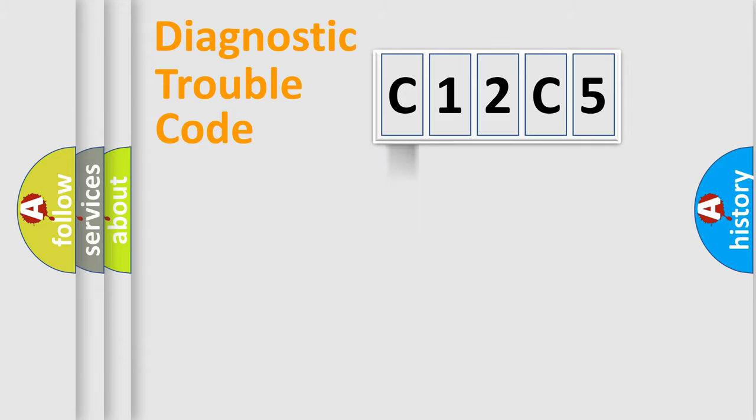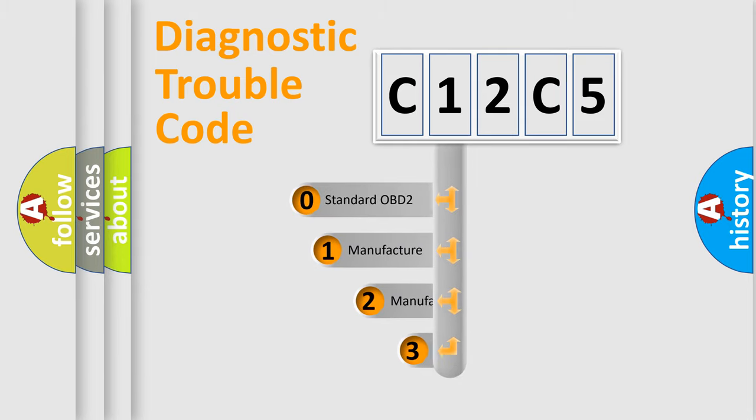Powertrain, Body, Chassis, Network. This distribution is defined in the first character code.